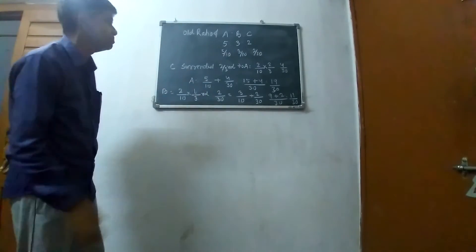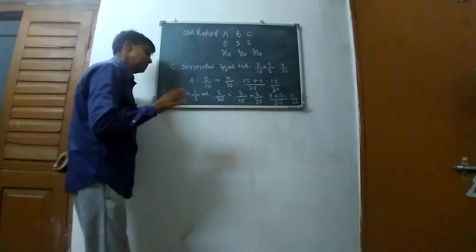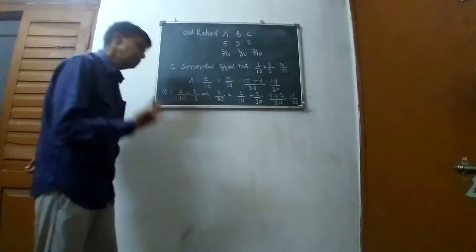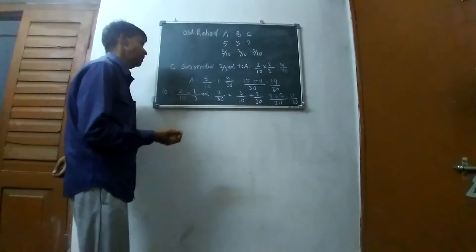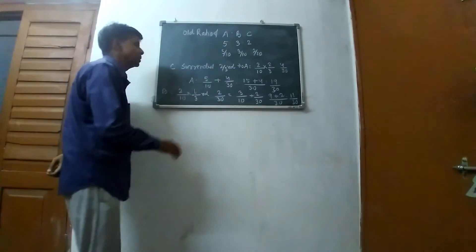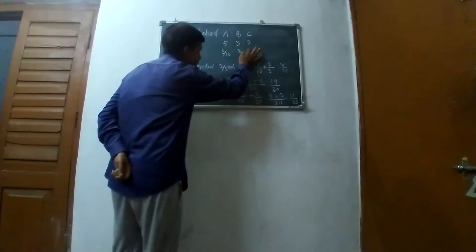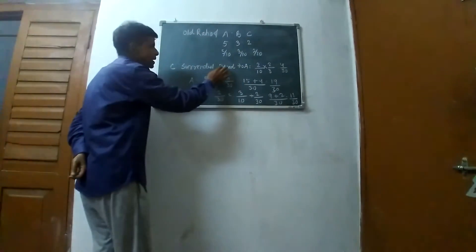In this question, C retired and gave 2/3rd share to A and 1/3rd share to B. C's share was 2/10, and 2/3rd of 2/10...